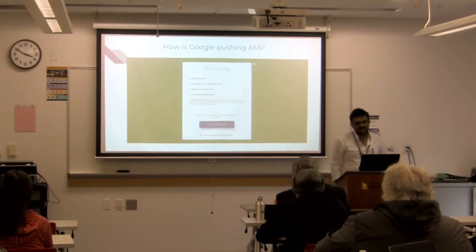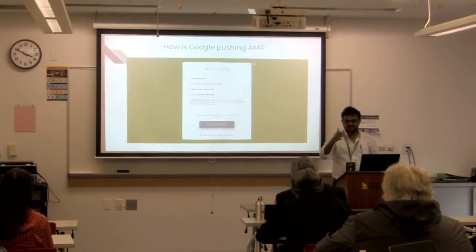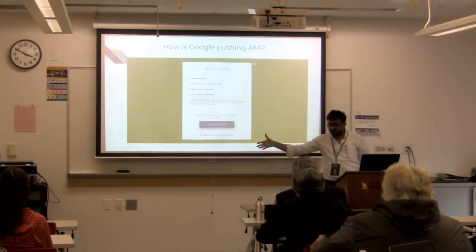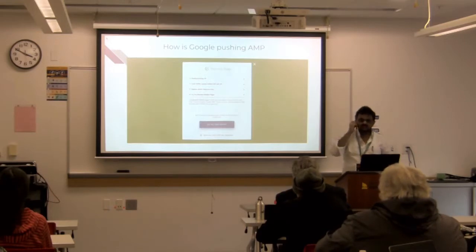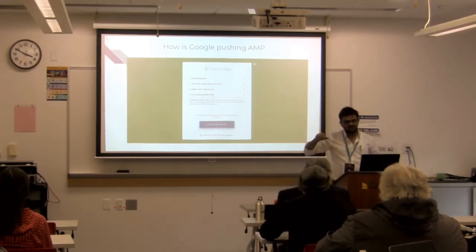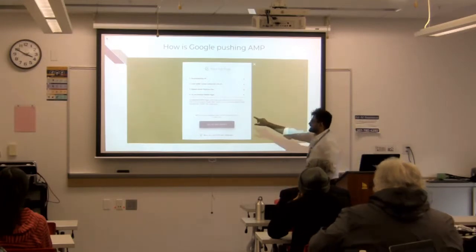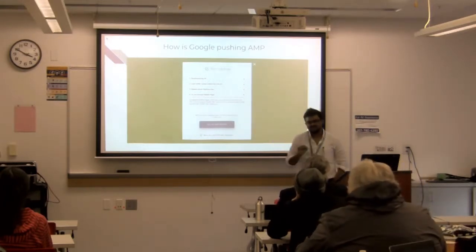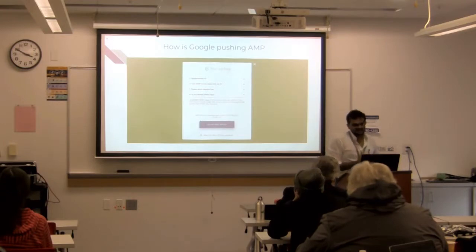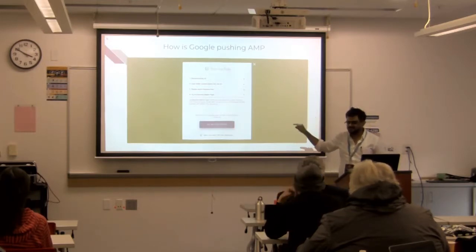There is a website called IThinkWithGoogle.com. If you go to TestMySite.IThinkWithGoogle.com and put in your site, it checks your website on a 3G connection. If it's not loading under 3 seconds, it gives you things you need to do — and there it says 'try accelerated mobile pages.' The funny thing is that the website I was checking was already built on AMP, and it was still telling me to build using AMP.